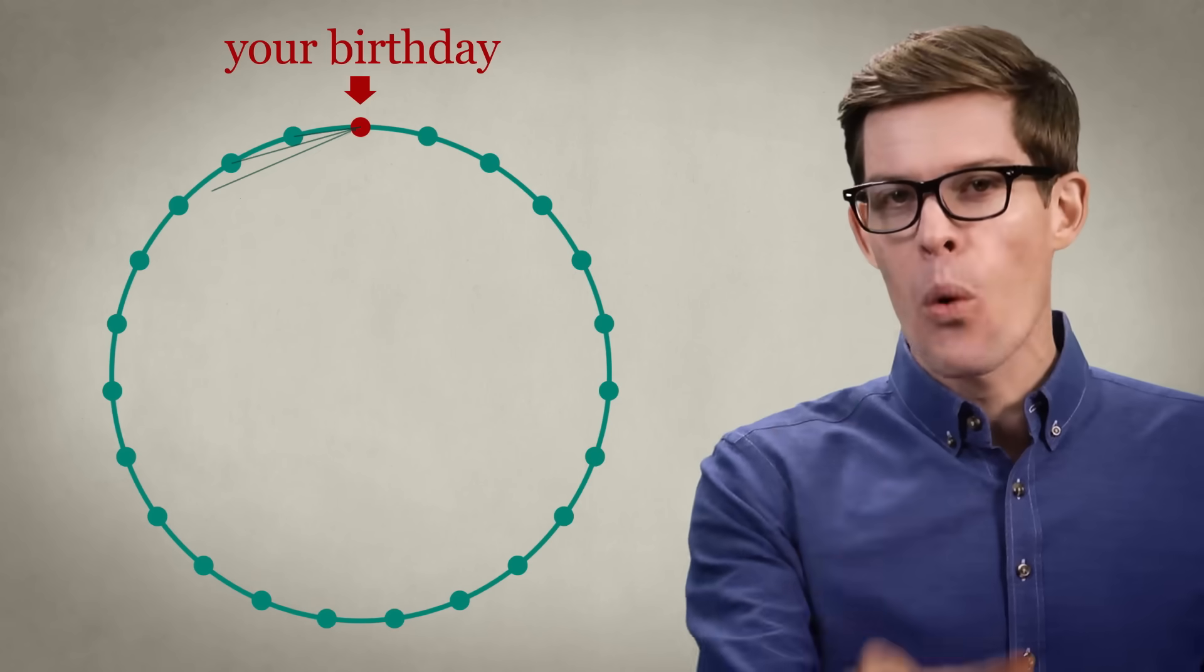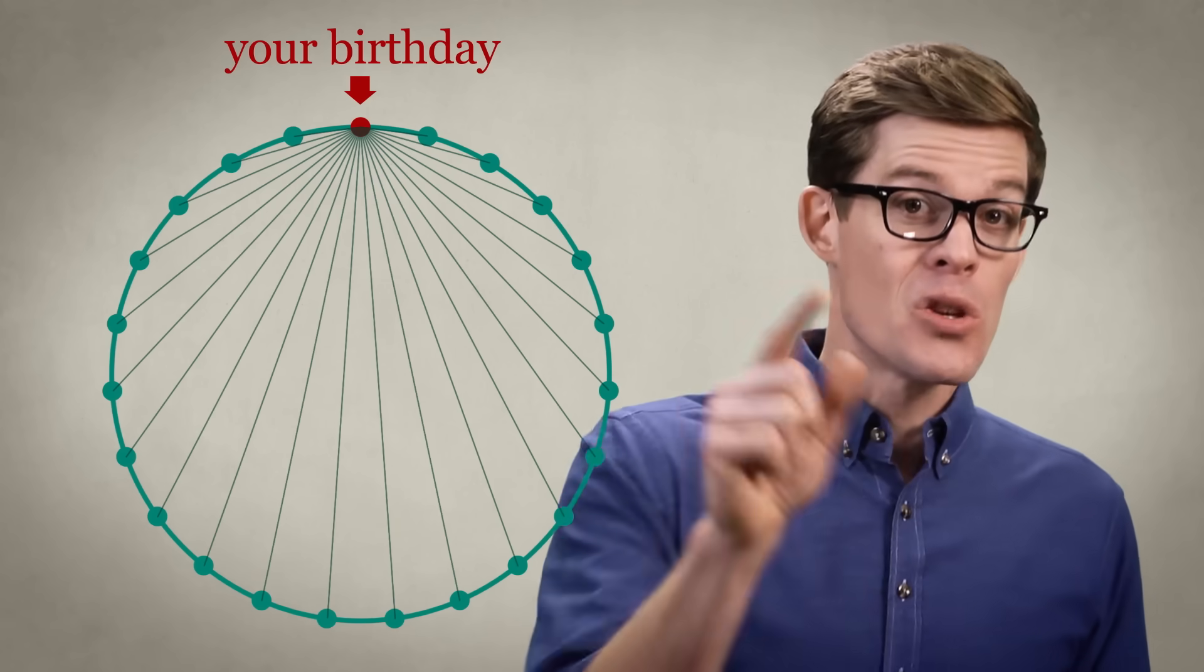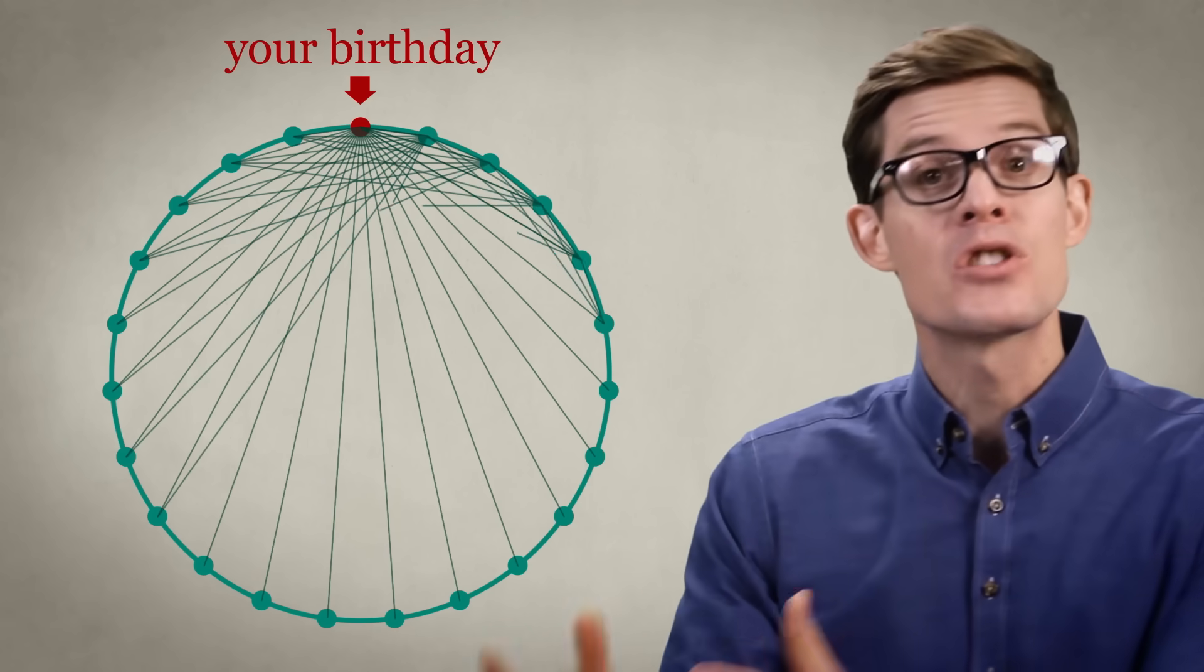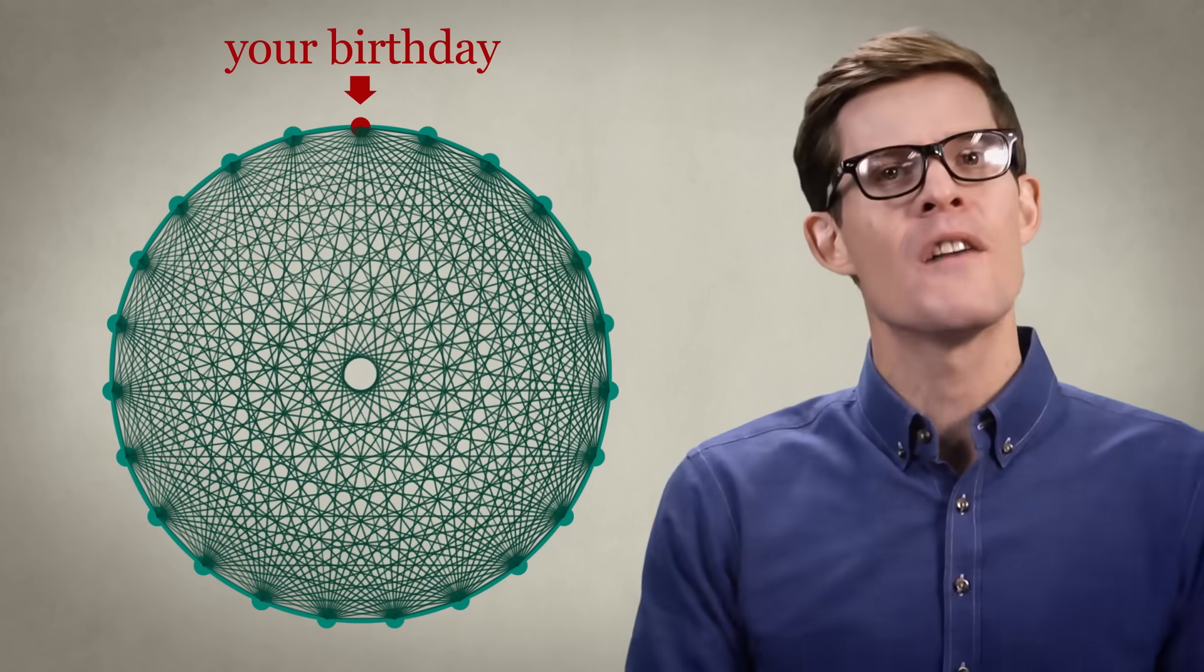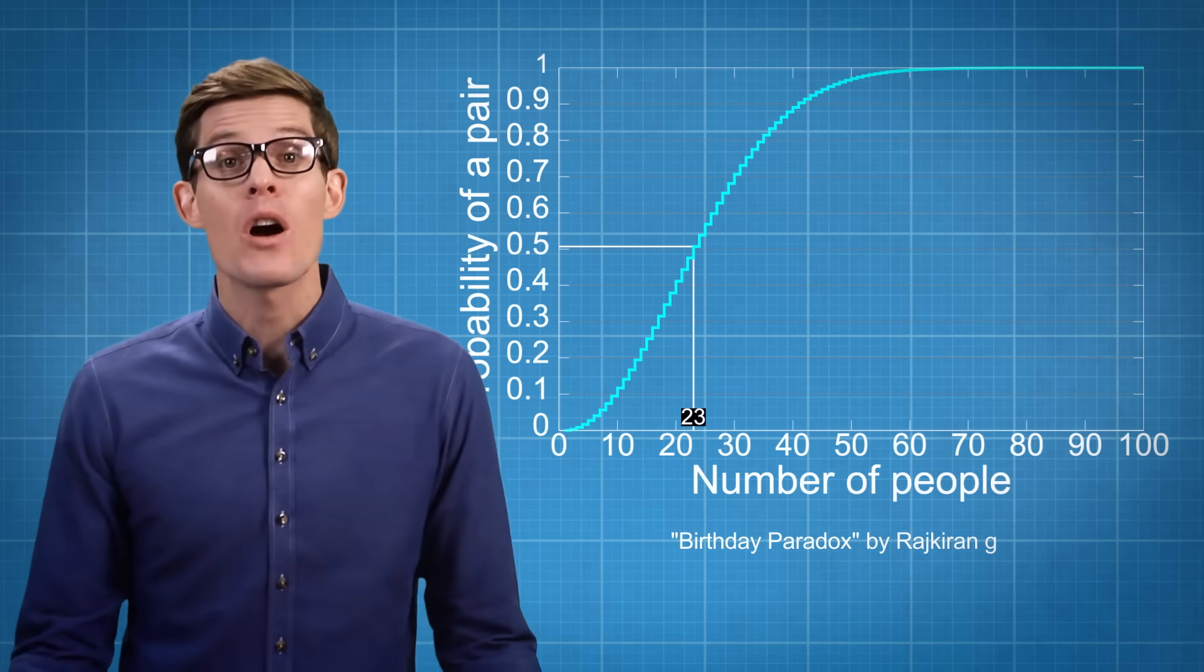This is a birthday paradox. It goes against our intuitions, because our brains are bad at figuring out the power of chance. Sure, in that room there's only 22 possible combinations of your birthday with someone else's, but there's 253 combinations of everyone's birthdays. Our brains have trouble imagining these combinations, estimating things that grow exponentially.